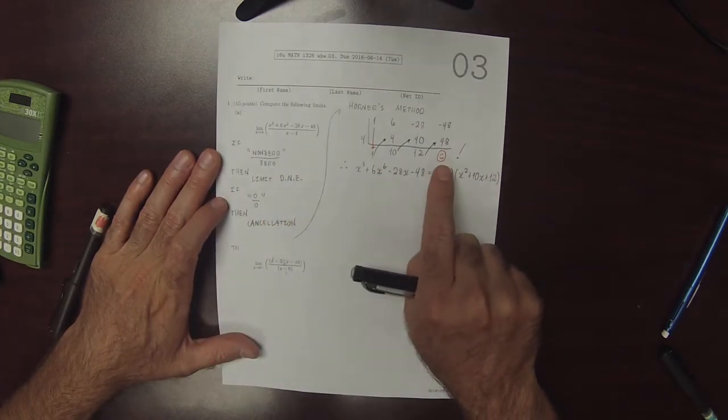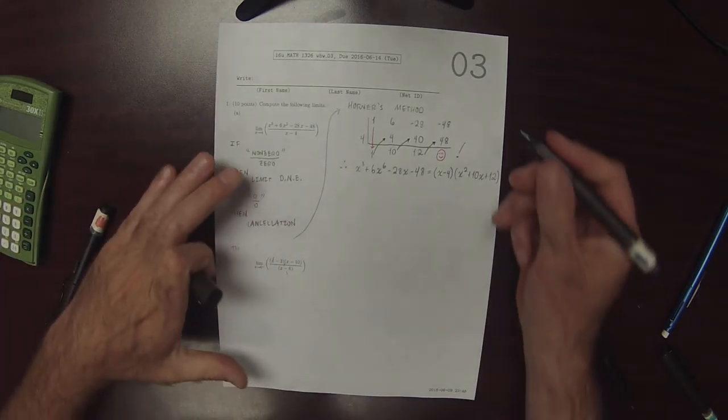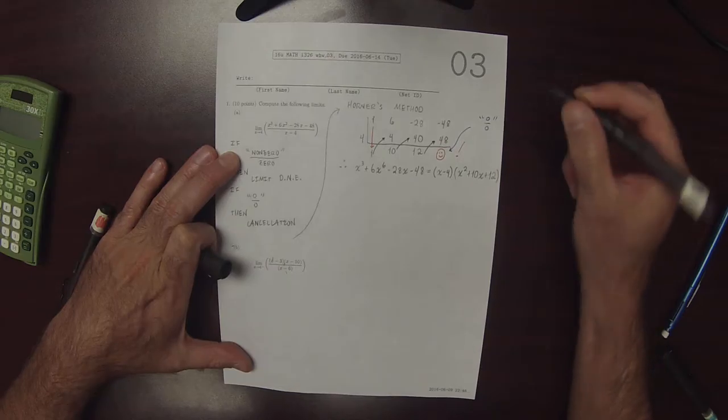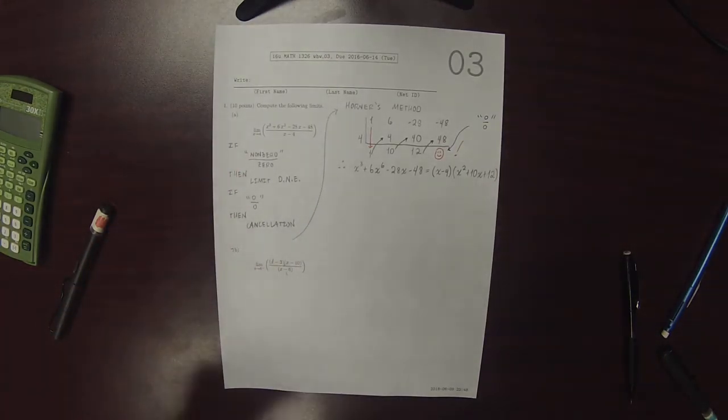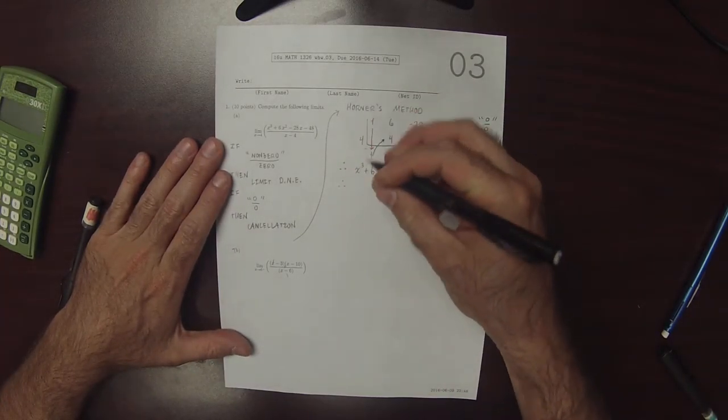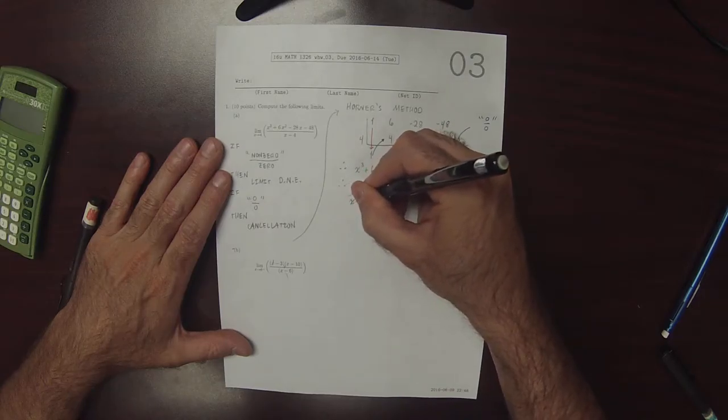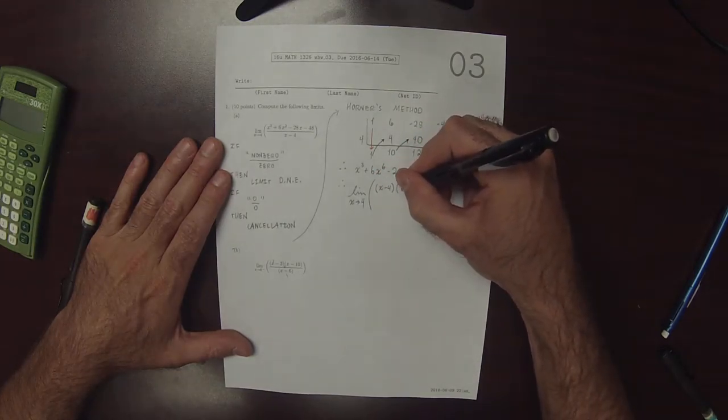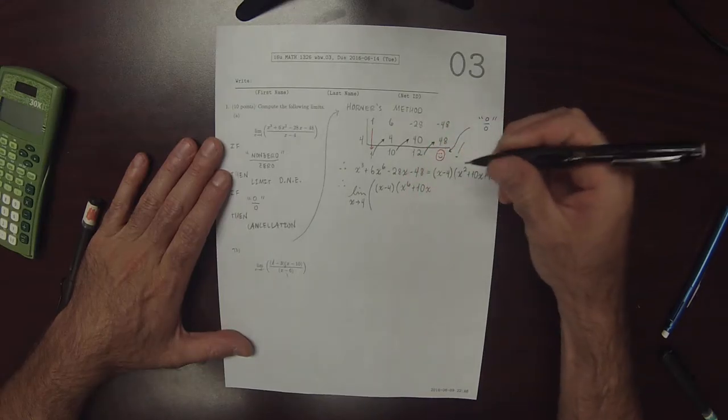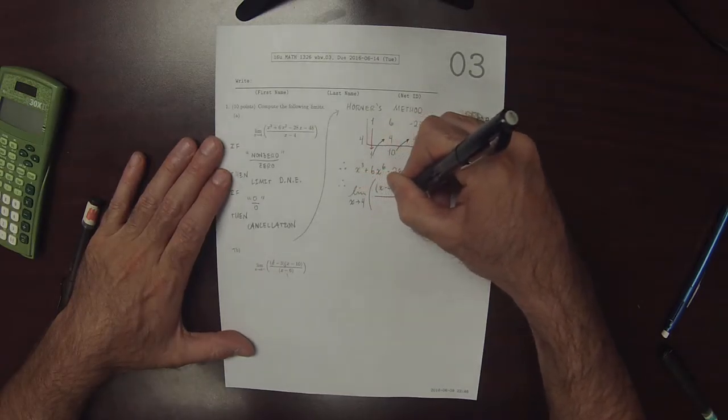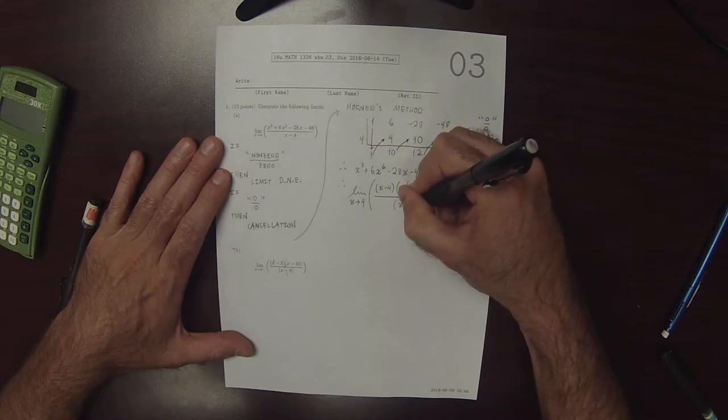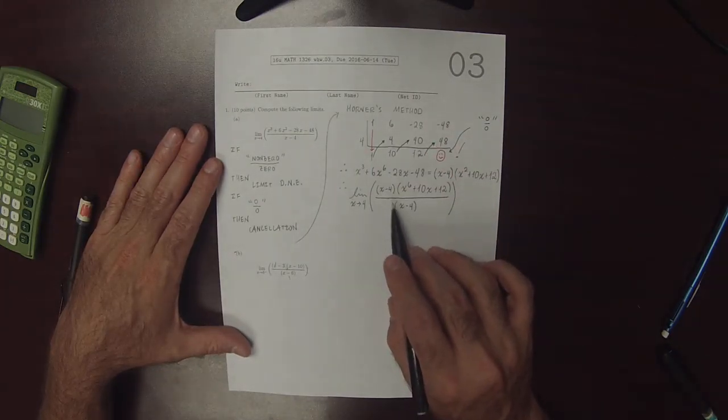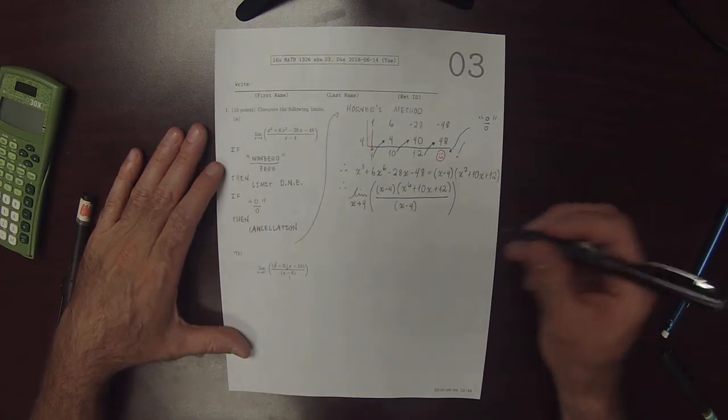So that's x squared plus 10x plus 12. So that means that the fact that we got this 0 right here in this exercise means that the limit is indeterminate. So it doesn't fall in this case. So as a result, the limit that we need to evaluate is actually the limit as x goes to 4 of x minus 4 multiplied by x squared plus 10x plus 12, and then this divided by x minus 4. And now that the limit is written in this way, it's clear why it's indeterminate because we have these factors, x minus 4, in numerator and denominator.